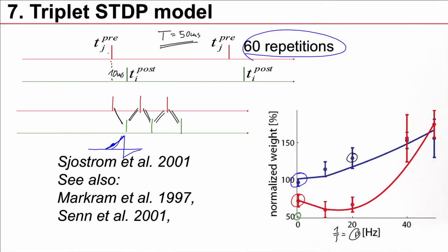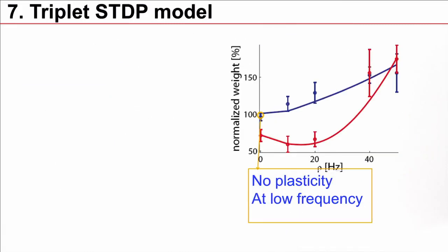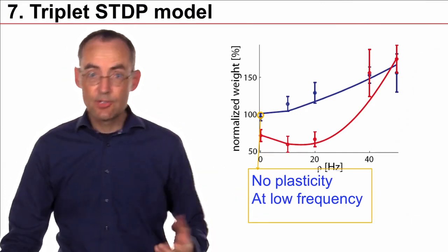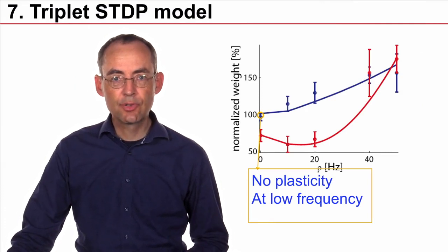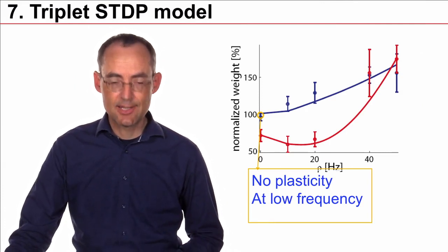And it doesn't matter anymore, except for the very first spike. It doesn't matter whether I do 60 repetitions pre-post, pre-post, pre-post, or the other way around. Now, a standard pair-based plasticity model, the form that we have discussed so far, cannot account for these frequency effects. In particular, there is this problem that we don't see any plasticity at very low frequency. So, the question now is, can we account for this frequency dependence of STDP?